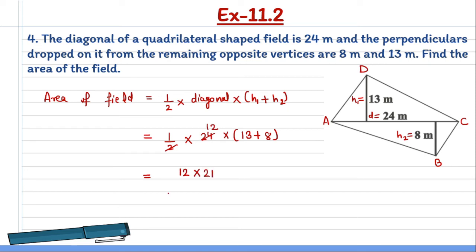This is equal to 12 into 13 plus 8, that is 21, which is equal to 252 meter square. I hope you understand the solution.